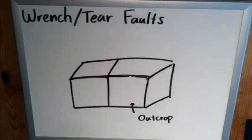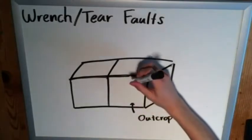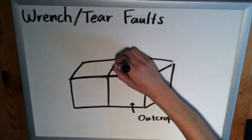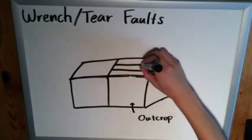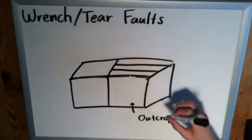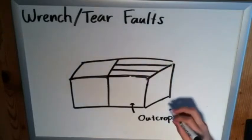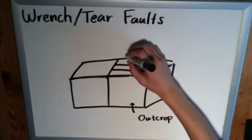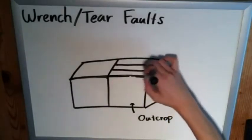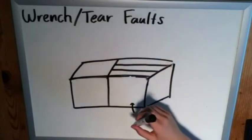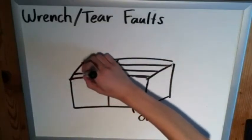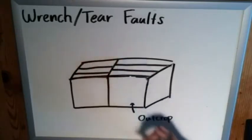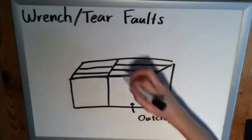Now we're going to draw in some strata here. What's interesting about wrench and tear faults is they actually are a type of strike-slip fault. What you'll see is that there's motion that causes these two top pieces to be farther apart, so we're going to have two completely different sets of strata showing on these two separate planes.